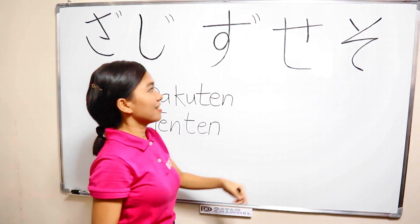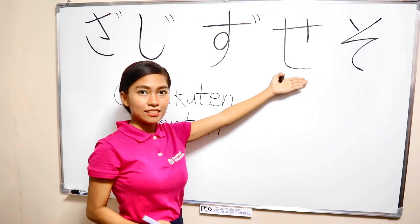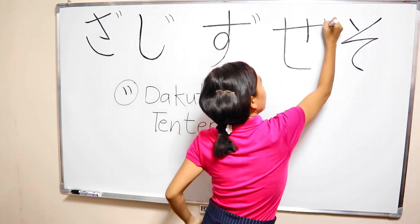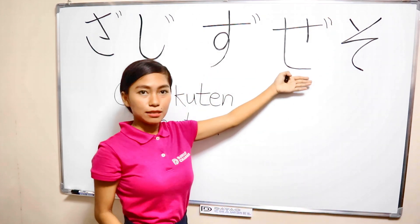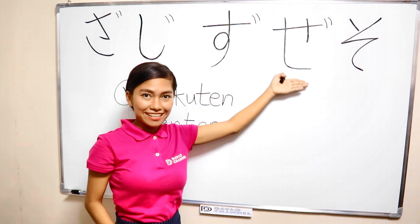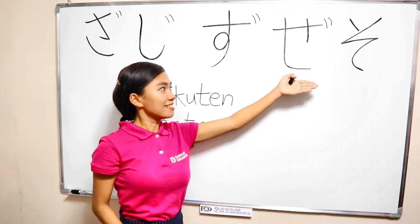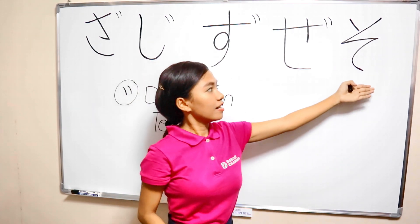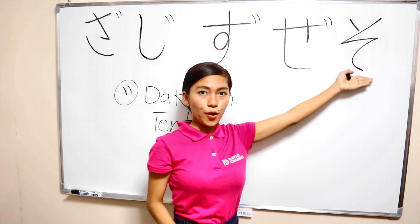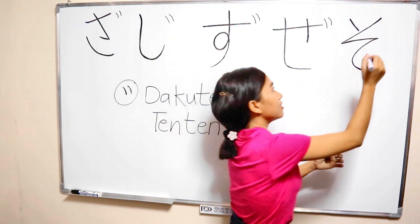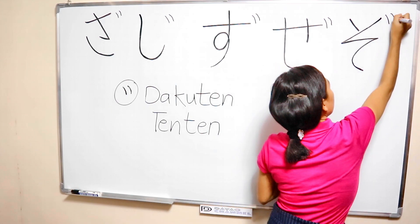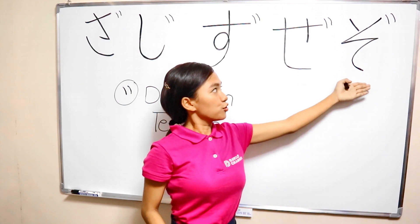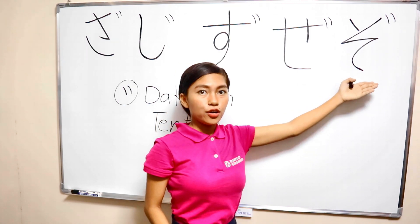Next, se. This is se. Just add tenten, and it becomes ze, ze, ze. Okay, the last one — so. This is so. Just add tenten, and it becomes zo, zo, zo.